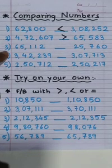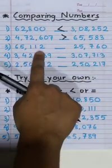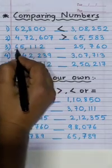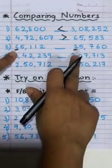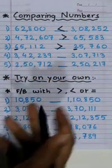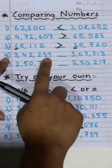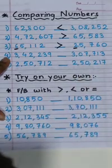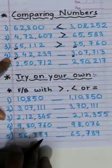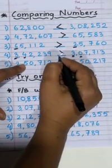But now when we move to number 3, we can see that both the numbers have equal number of digits. 65,112 and 25,760 — both are 5 digit numbers. So here we will first compare the first digit. Here 6 is bigger than 2, so we easily conclude that 65,112 is a bigger number. Moving forward again, we have equal number of digits in both the numbers: 3,42,239 and 3,77,13 — both are 6 digit numbers. So we will start comparing the first digits. Both are equal, no problem. The next digit: this is 4 and here we have 0, so this is bigger.